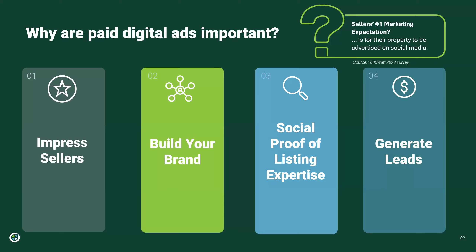From a lead generation standpoint, there is value to all events within the listing lifecycle. When you're advertising a coming soon or an open house, you're probably going to attract mainly buyers. But when you're under contract or sold, that's going to be very attractive to sellers, evidencing your neighborhood savvy and that you get things done. From a lead standpoint, we're tracking at about $20 per lead — meaning either a phone number, an email, or both. So for a $100 ad spend, you're going to average about five leads, and that's pretty good value.